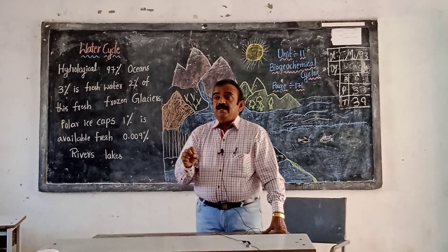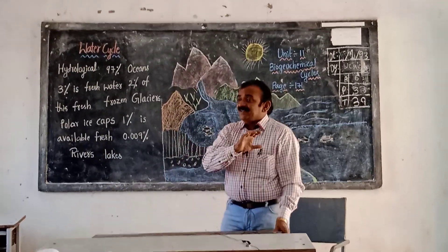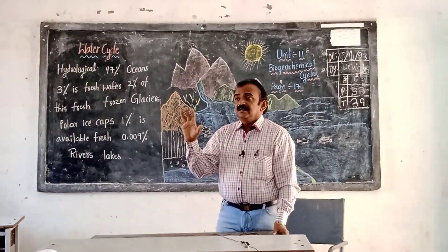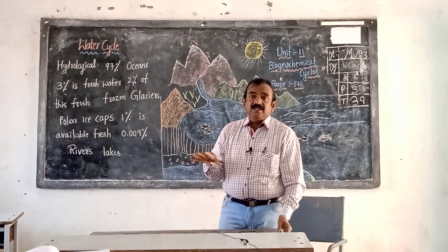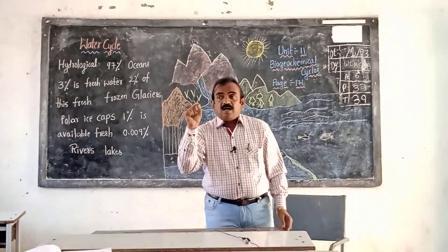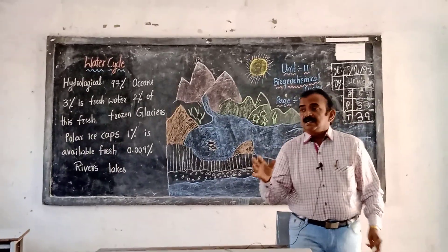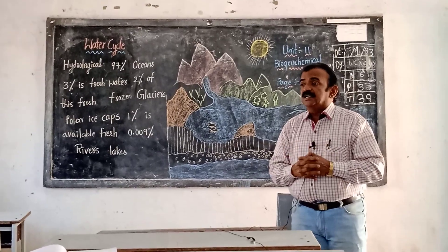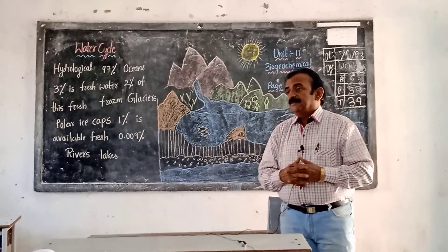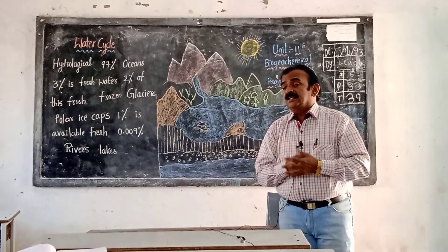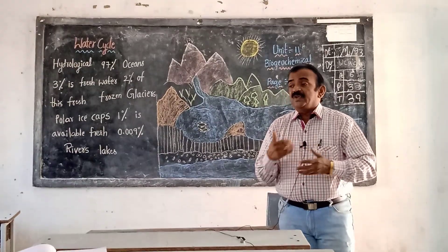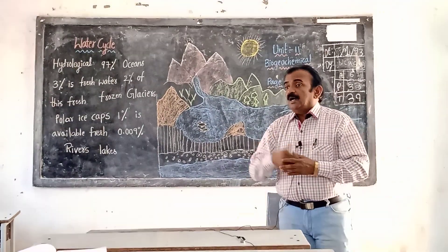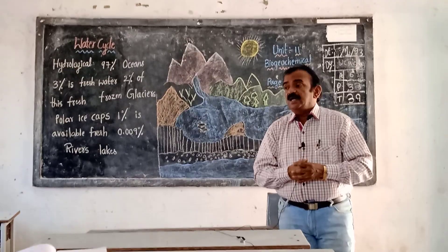We need to know that water is neither added nor does it disappear from the Earth. Each drop of water is not added and does not disappear from the Earth. We need to understand how this takes place and what is the reason. What phenomenon is occurring such that the water is not changed on the Earth?